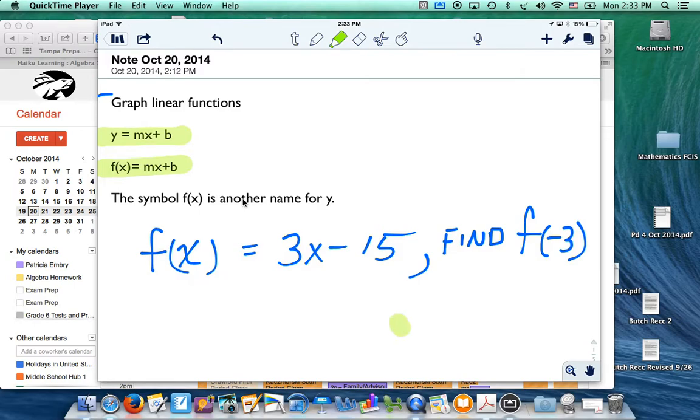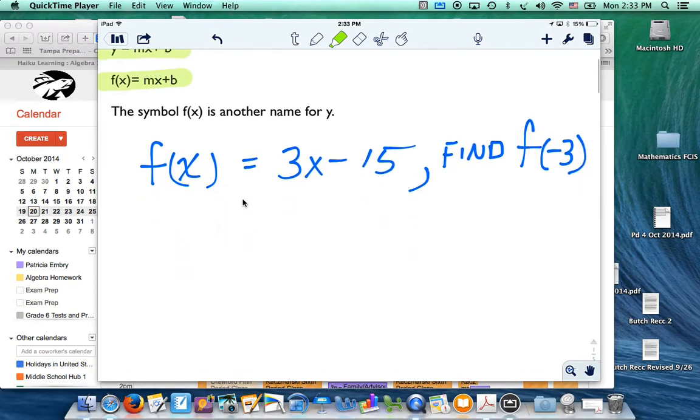Here's the problem. f of x equals 3x minus 15. Find f of negative 3. That means I want to find out what this function is when the x is negative 3. That means I'll have to plug in negative 3 everywhere I see an x.